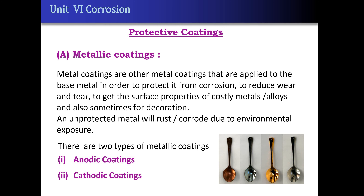Metallic coatings are those coatings which are applied on the surface of base metal. Here, one type of metal is coated with another type of metal, either to reduce corrosion, to reduce wear and tear, or to impart a costly metal surface on cheap metal. Unprotected metal will undergo corrosion or rusting due to reaction with the environment, so protection is required.